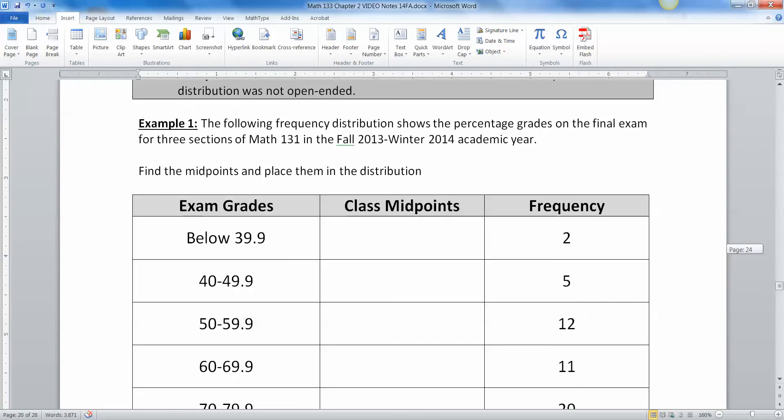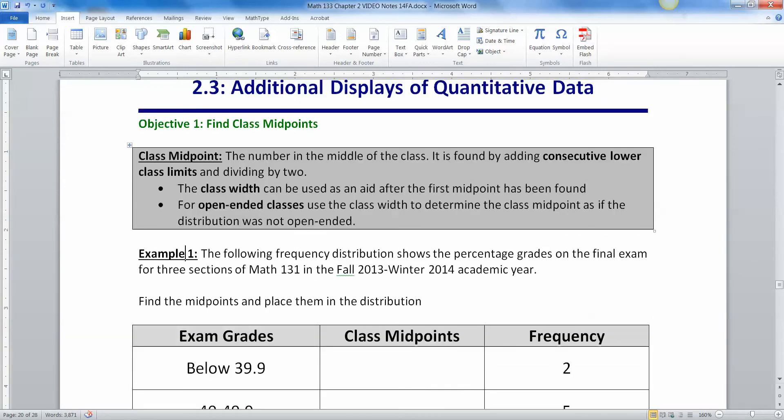So we've looked at quite a bit already, but we're going to expand our horizons just a little bit. Now before we do that, we have to find something first. We have to find something called the midpoint, the class midpoint. Now the class midpoint is in the middle of your class, so you can find it by adding consecutive lower class limits and dividing by 2. That's what it says right here.